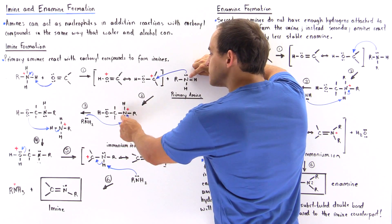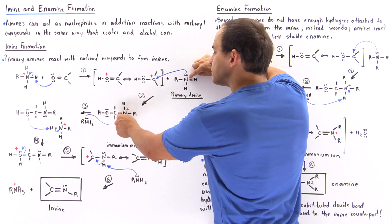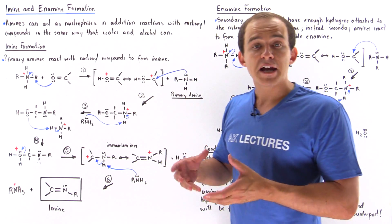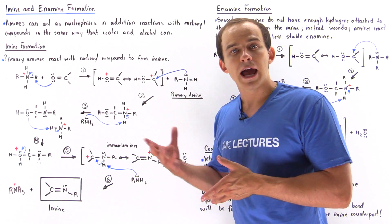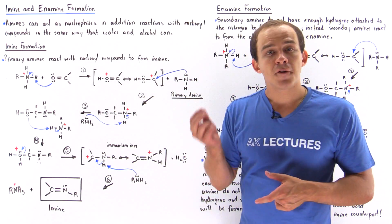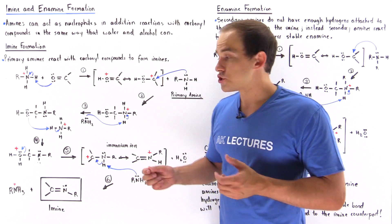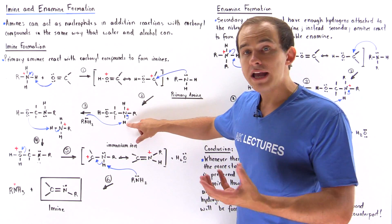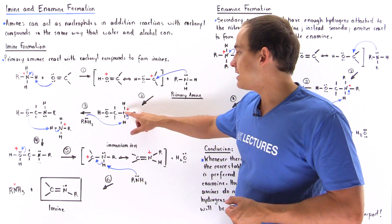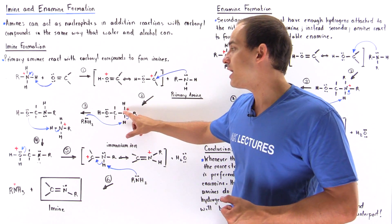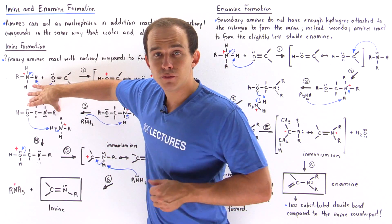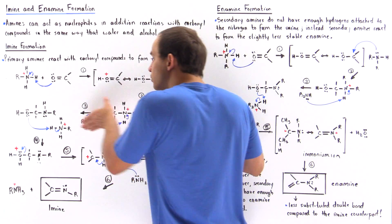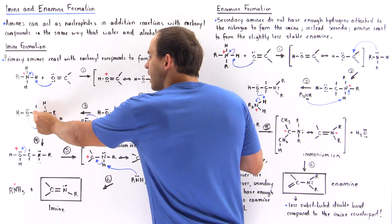Only primary amines will react with carbonyl molecules to produce the imine product. In the second step, the primary amine uses its lone pair of electrons on the nitrogen to act as a nucleophile, creating a bond between the nitrogen and the carbon. We form a carbon-nitrogen bond, and now we have two H atoms on our nitrogen, this new bond, and the bond to the R group. There is a positive charge on this nitrogen, which is destabilizing because nitrogen is relatively electronegative.